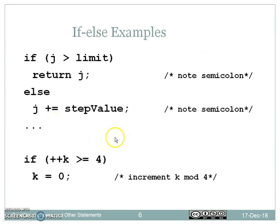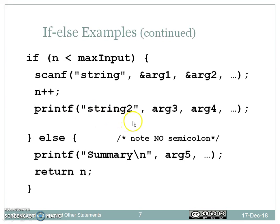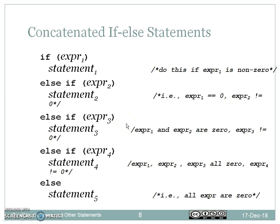Here is an example of if-else: if j is greater than limit, then it returns the value of j; else the j value will be incremented by the step value. These are some examples of if-else statements.